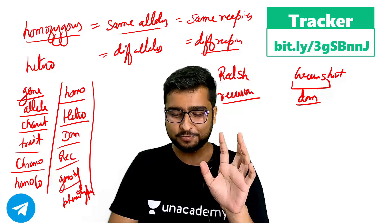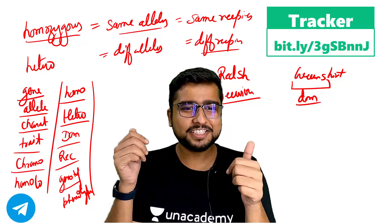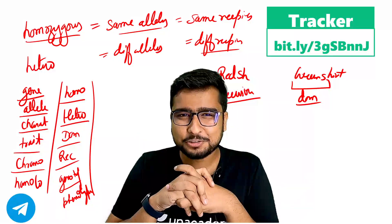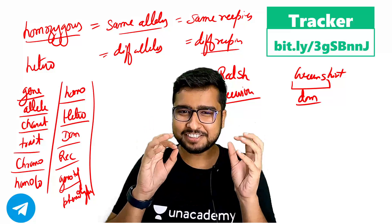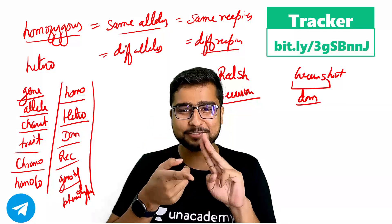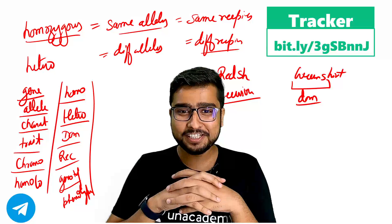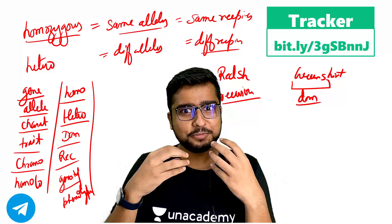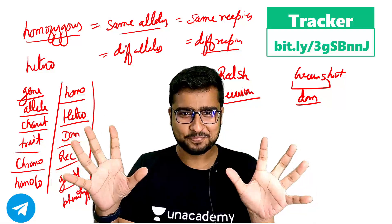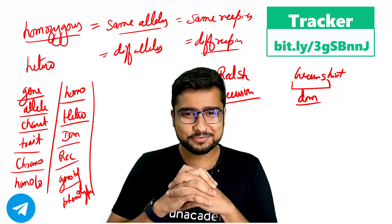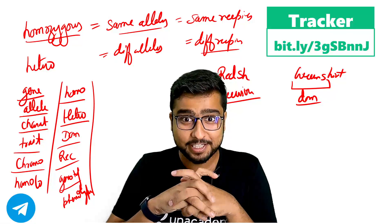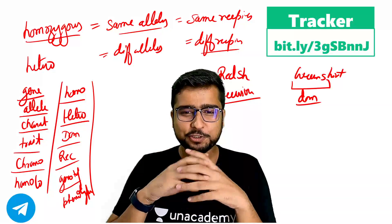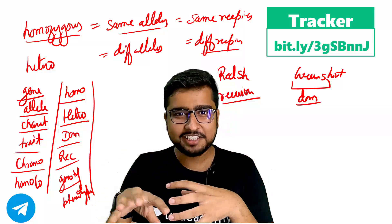So guys, just to give you a quick summary — today we talked about gene, allele, character, trait, chromosome, homologous chromosomes, homozygous, heterozygous, dominant, recessive, genotype, and phenotype. All the genetic terms that you use in Mendel's crosses — humne sare clear kar liye hain — woh bhi khaane ke baare mein! I'm very sure your mouth is watering! If you want more such videos, click like, share, and subscribe, and share with your friends. I'm going to come up with more videos to explain Mendel's laws in these easy ways.